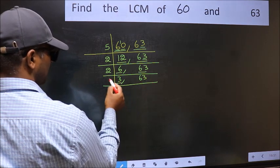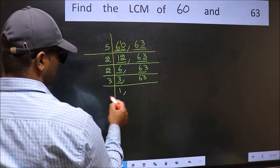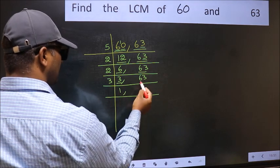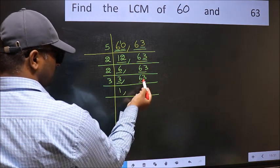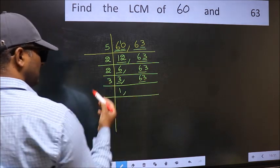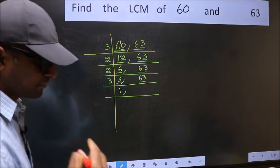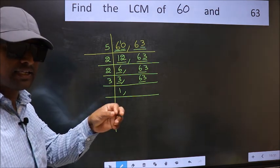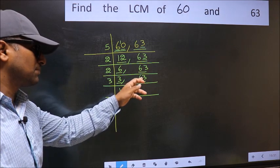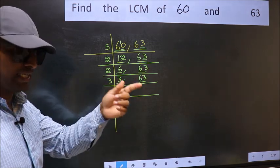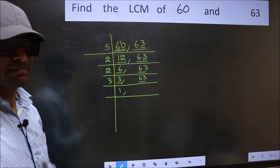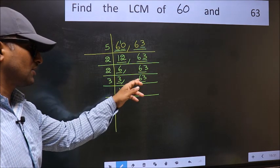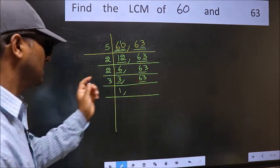Now here we have 3. 3 is a prime number, so 3 once 3. The other number, 63. To check whether 63 is divisible by 3 or not, add the digits. 6 plus 3, we get 9. And 9 is divisible by 3, so this number is also divisible by 3.